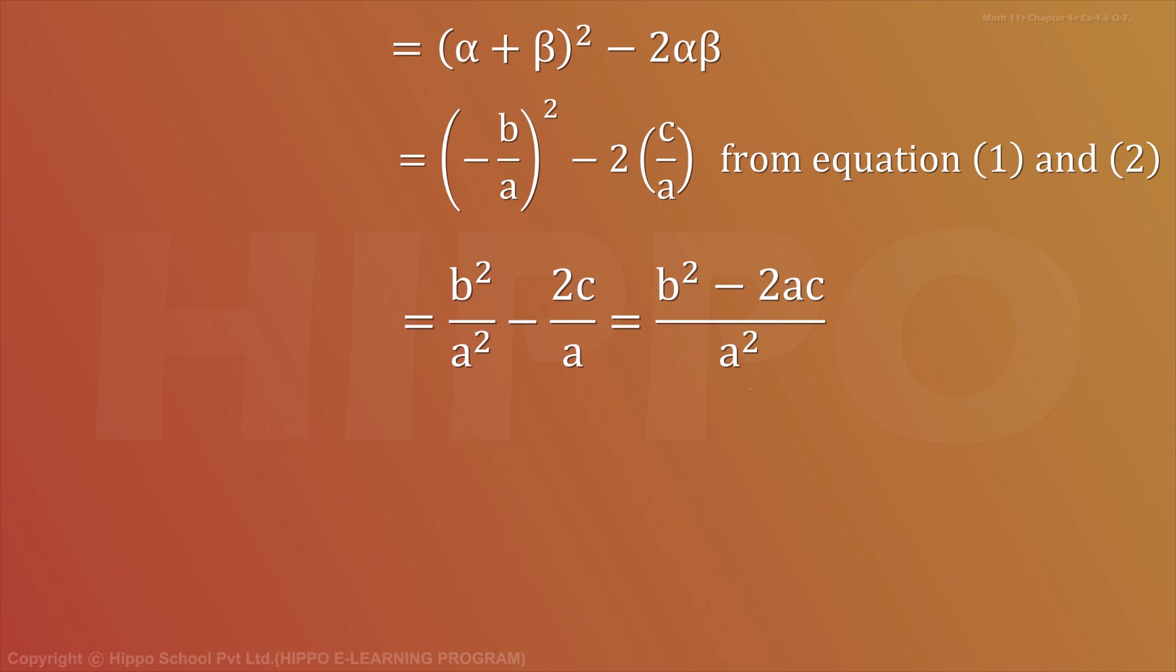And p = α²β², which is equal to (αβ)² = (c/a)² = c²/a², from equation number 2.